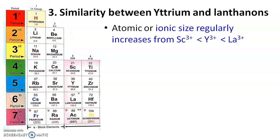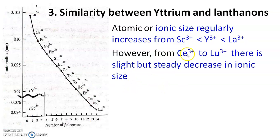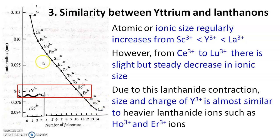From lanthanum to lutetium there is a gradual decrease in size — lanthanide contraction. From Ce³⁺ to Lu³⁺ there is a slight but steady decrease in ionic size. Because of this lanthanide contraction, the size and charge of lutetium become almost similar to the heavier lanthanide ions such as holmium and erbium.